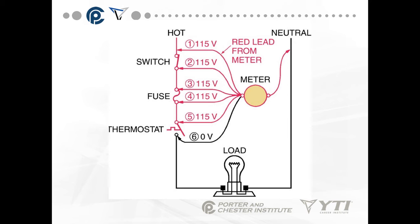We take our meter and use the hopscotch method. We put one lead on neutral and start at point 0.1. Between 0.1 and neutral we have 115 volts. Between 0.2 and neutral, 115 volts. Between 0.3 and neutral, 115 volts. Between 4 and neutral, 115 volts, because we're going across the load — so that's all good.